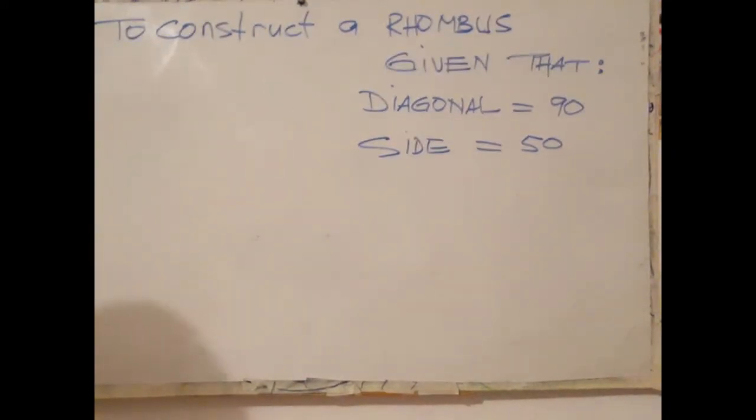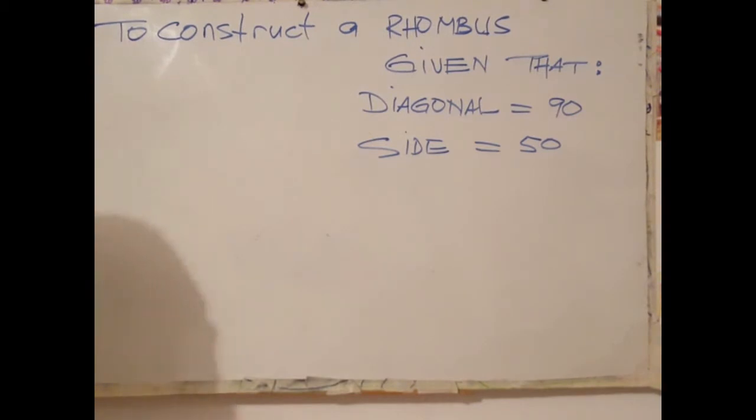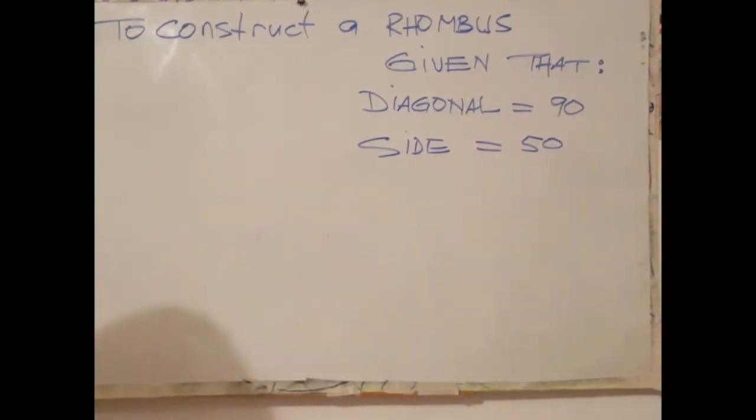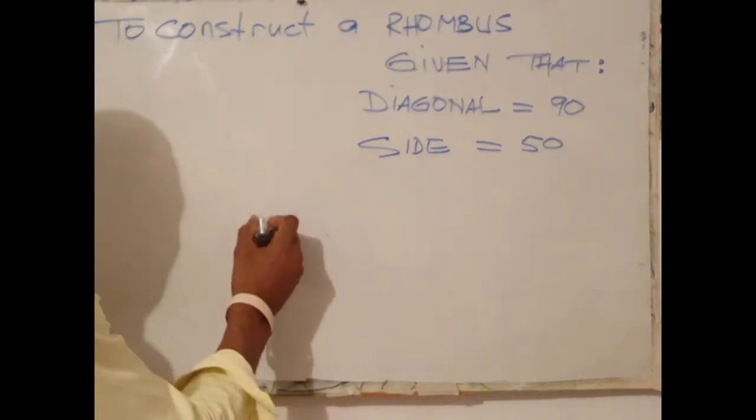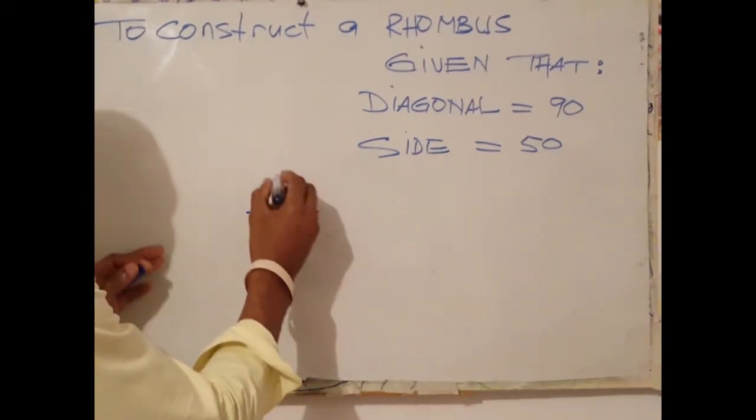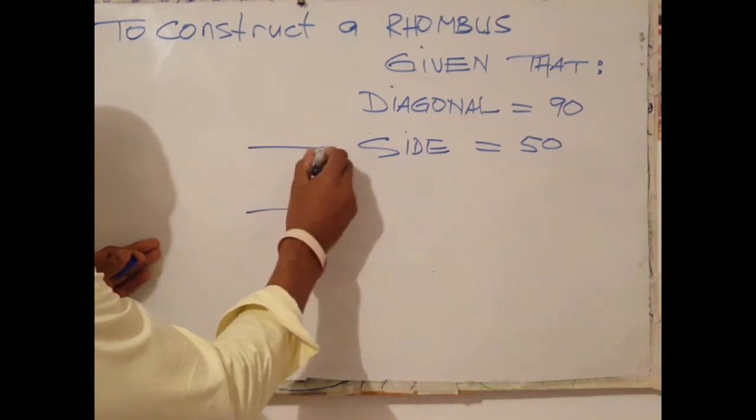A rhombus is a quadrilateral which has all sides equal. A rhombus also has a pair of angles equal, or adjacent angles are equal. A rhombus is basically a squashed rectangle.